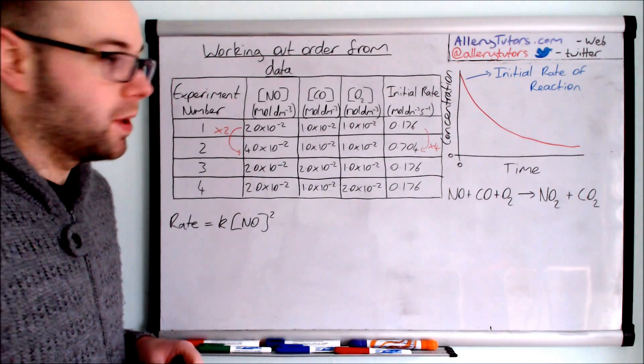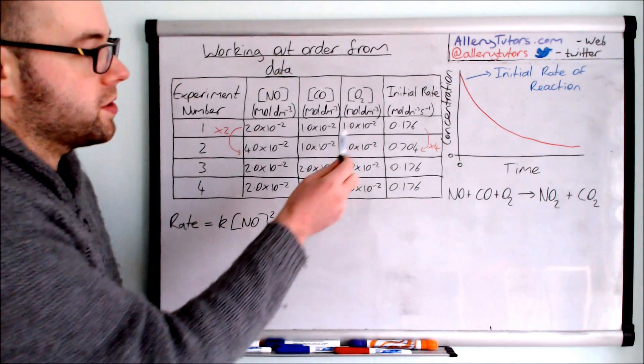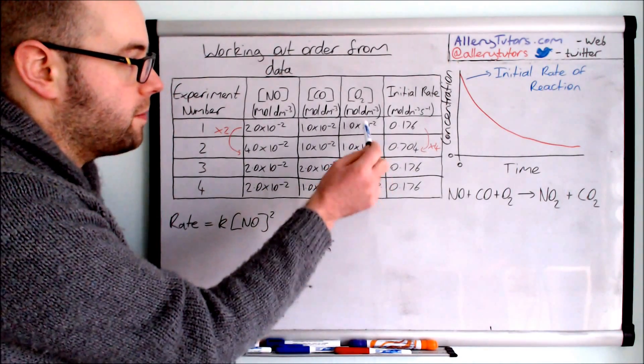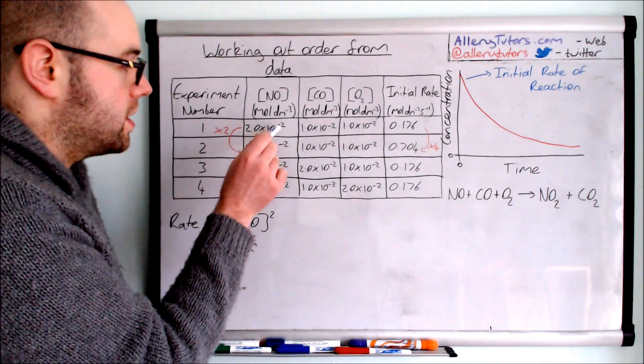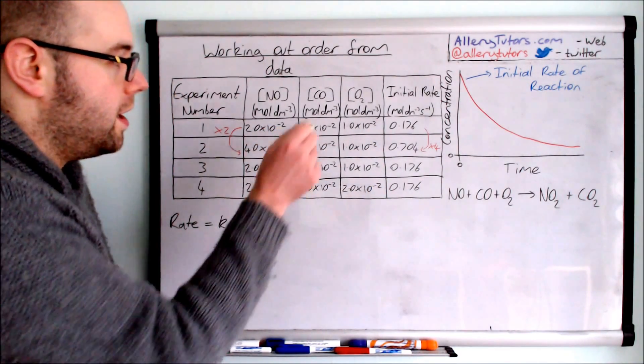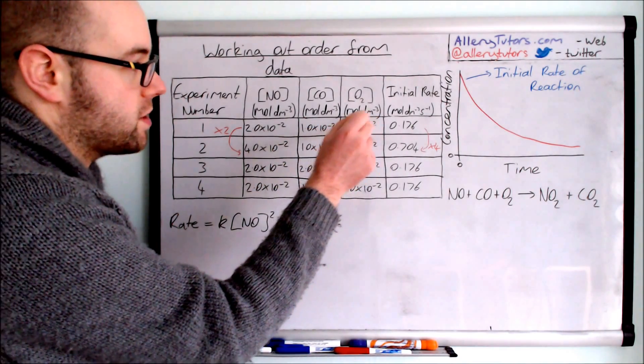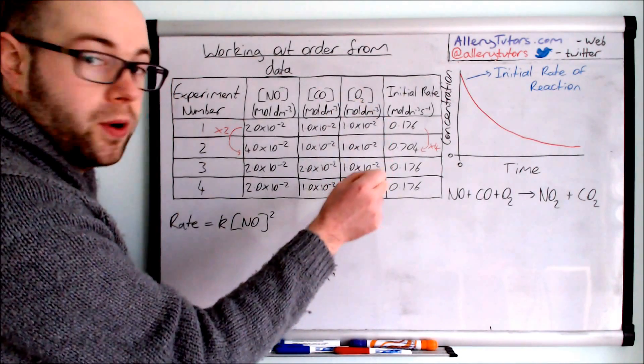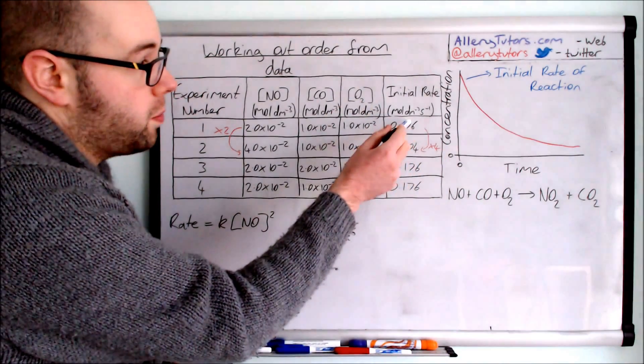The next one is oxygen. You can see oxygen here we've got a doubling here. It's the only one which doubles so we have to pick the fourth one and compare it with the first one. The reason why is the nitrogen monoxide concentration is remaining the same here and so is the carbon monoxide one here. Any changes in rates can only be caused by oxygen if we're going to use one and four. So we look at the rate for one and four.